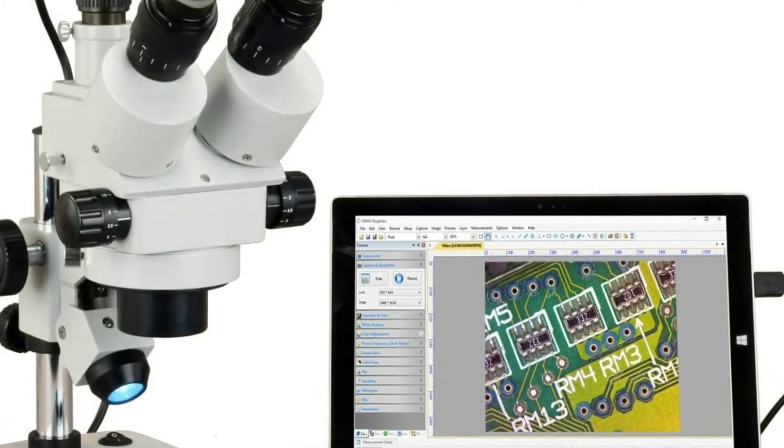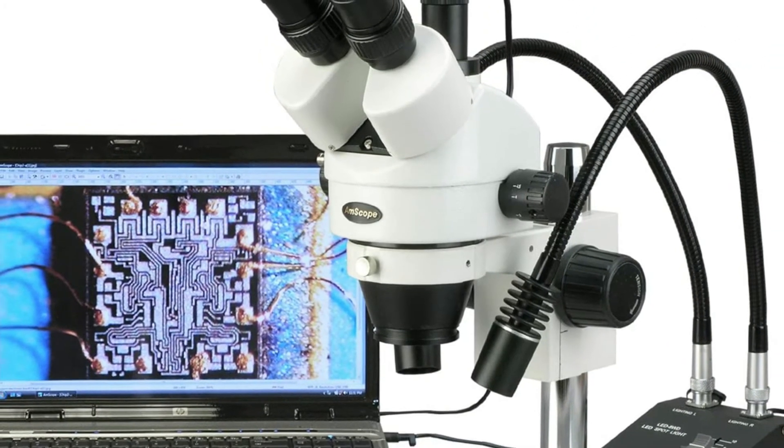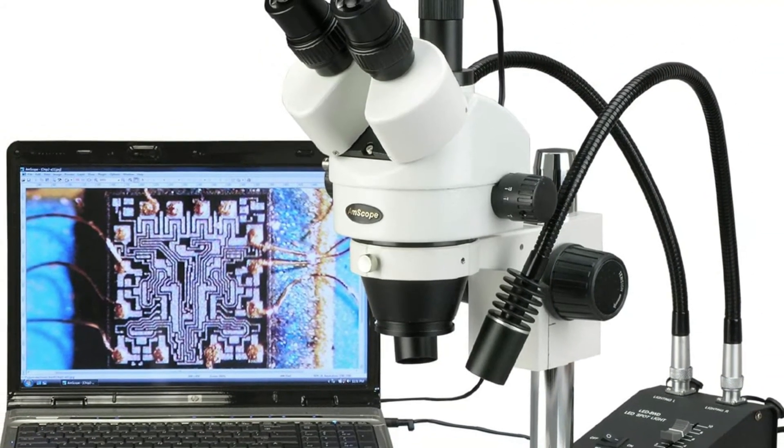The 360-degree swiveling trinocular head is attached at a 45-degree angle, which ensures easy and comfortable observation, especially when used in conjunction with the included rubber eye guards.